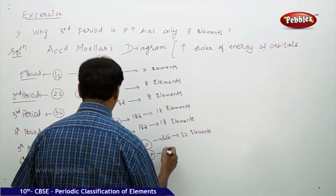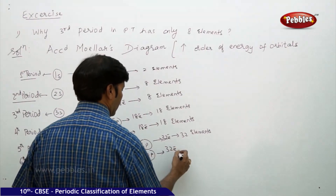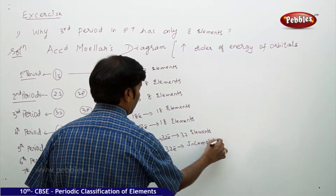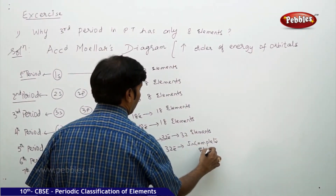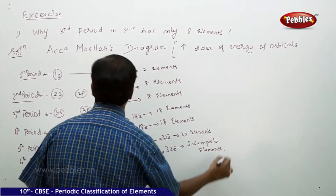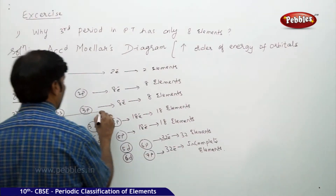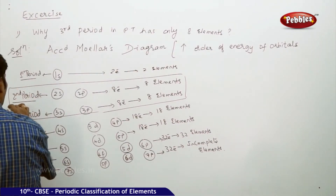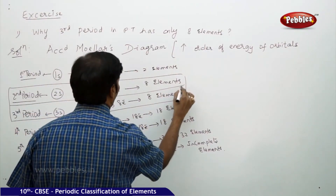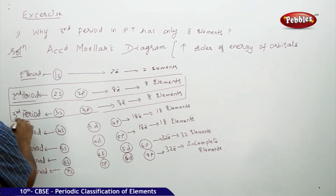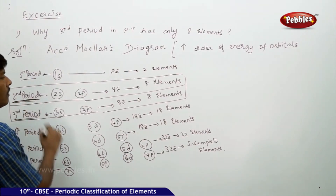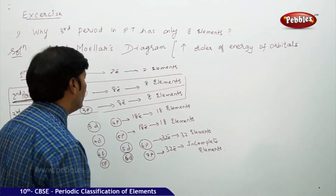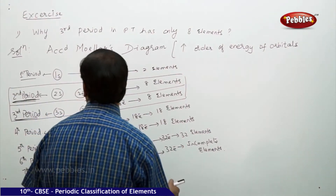The seventh period also has 32 electrons, but with incomplete elements. What you're noticing is that in the third period, if you apply the formula, and carefully observe the second and third periods, you find that the number of elements assigned are one and the same. This is because the elements are divided into blocks.